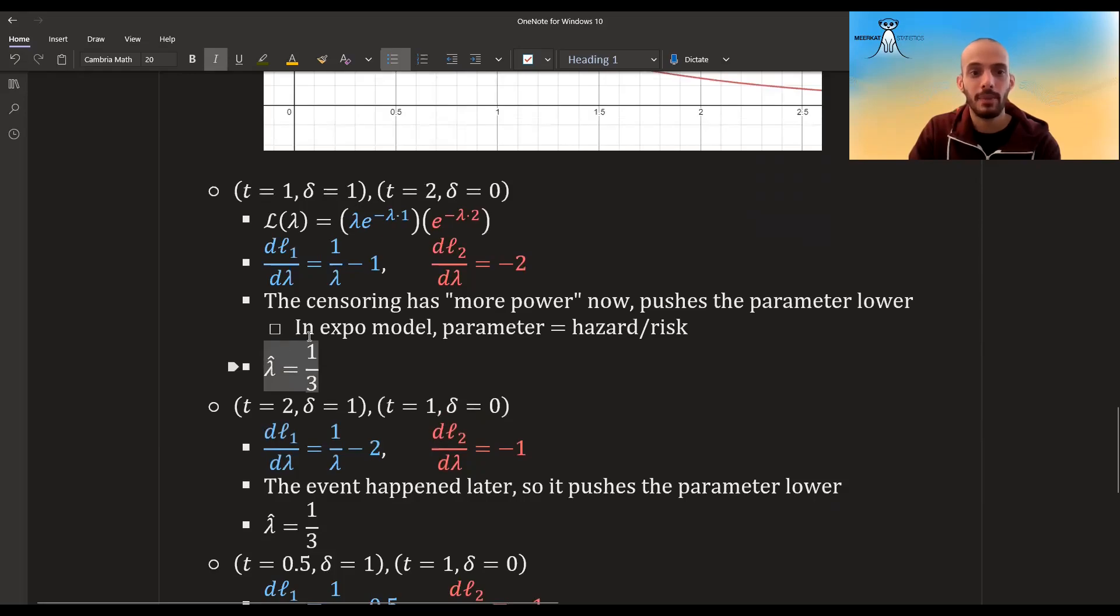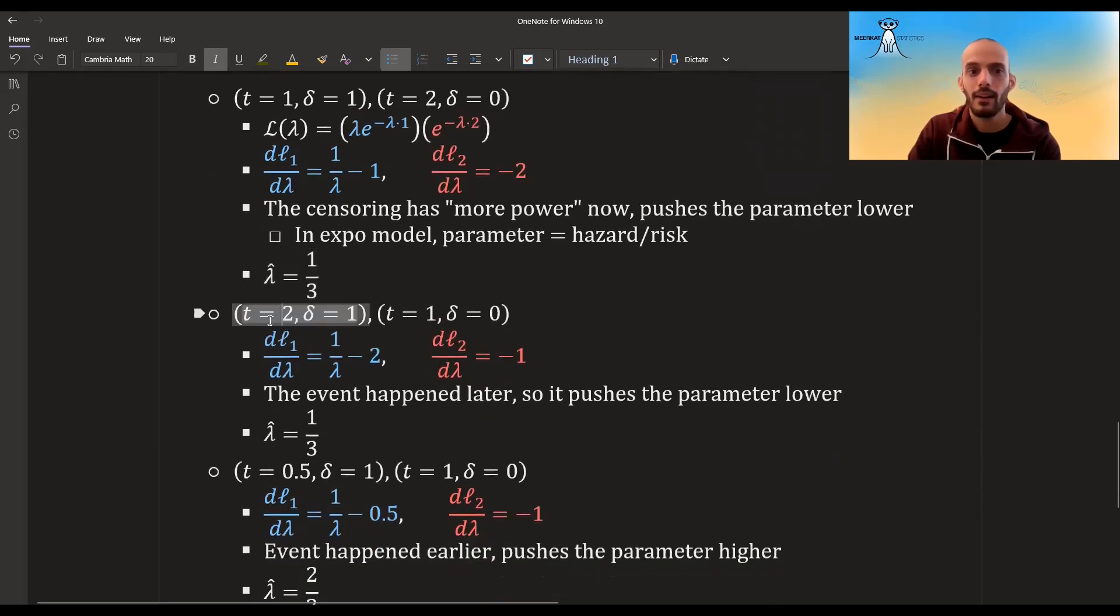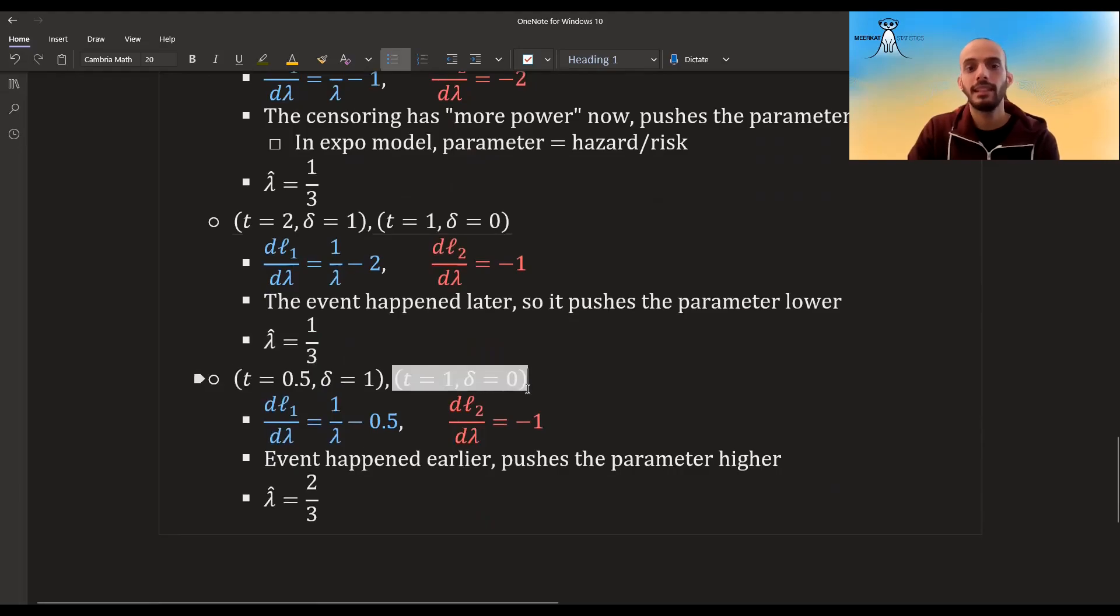And in this case, the parameter will be one third. Also, this would happen if we leave the censored observation, but we push forward the event time. This would have the same effect. We would get the same parameter. If we leave the censored observation, but we push downward the event, meaning that the event happens sooner, then this increases the hazard. This pushes the parameter higher and we'll get a parameter of two thirds.